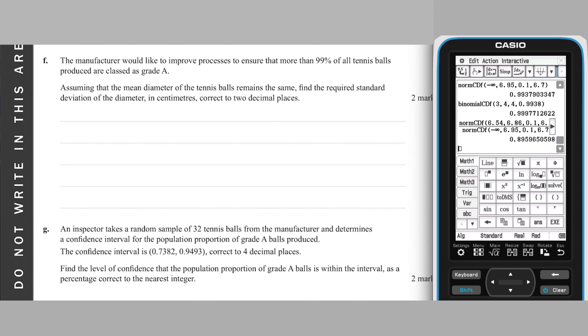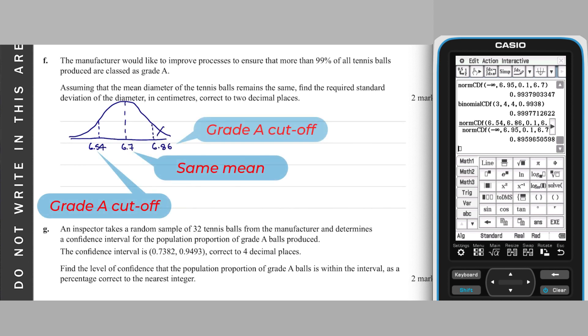Part F looks to find the standard deviation of an improved manufacturing process, where 99% of tennis balls were grade A. Drawing this diagram is both a good working step, given the question is worth two marks, and also a way to get insight into the question. From here, the required standard deviation can be found using a range of methods, including trial and error, use of the Z-score formula Z equals X minus mu over sigma, or by solving a norm CDF equation.